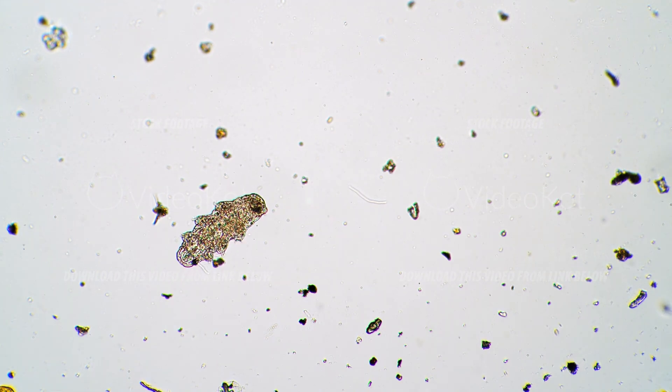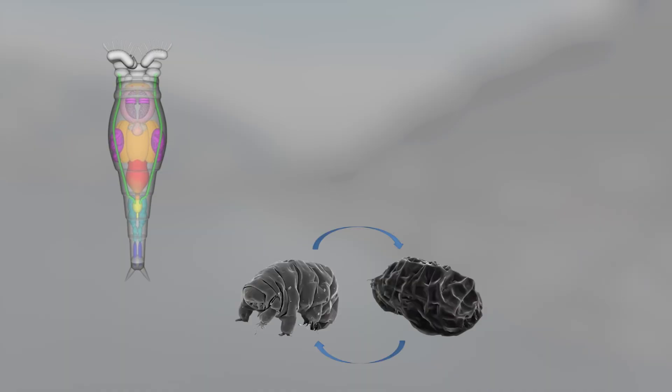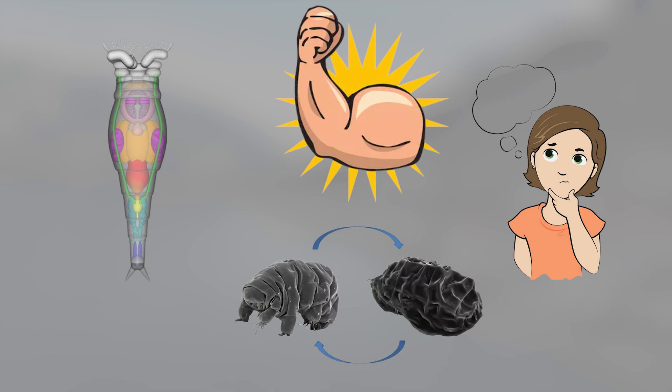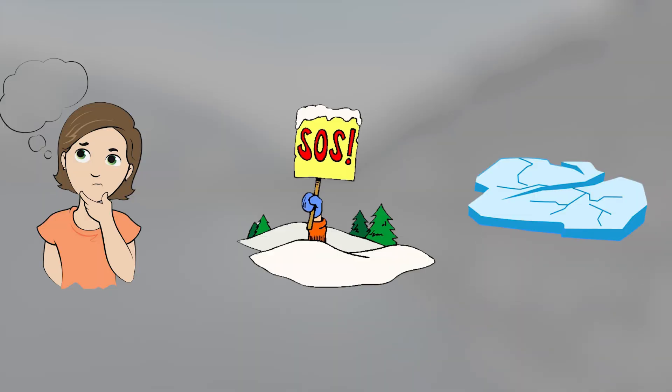Even tardigrades, the so-called immortal animals of Earth, haven't been revived from anything close to that timeline. So now scientists are asking: is this species a fluke, or is cryptobiosis more powerful than we ever imagined? If one microscopic animal can do this, what else is buried in the permafrost?